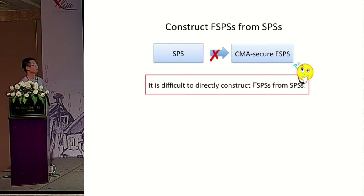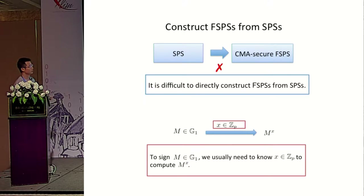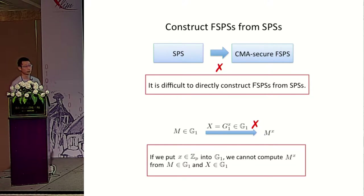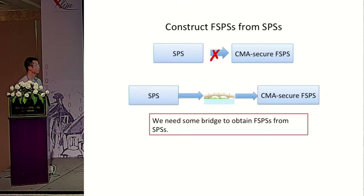So it's natural to ask if we can construct fully structure-preserving signatures from standard ones. But we found that it's a little difficult to directly construct FSPS from SPS. For example, if the message is elements in G1 and the signing key is x in ZP, in the signing procedure we usually need to compute M to the x from M and x. But if we put the signing key into the group — meaning the signing key is G to the x — then it's hard to compute M to the x from capital M and capital X. This is due to the CDH assumption.